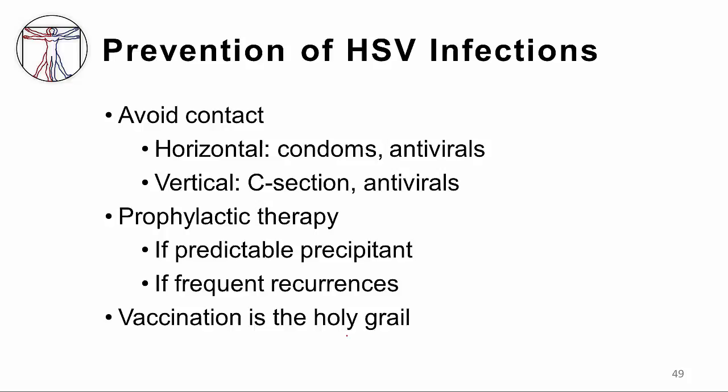There may also be a role for antiviral therapy in pregnant women, although that role is not dramatic and not completely defined, but it is often used. Prophylactic antiviral therapy may be useful under some limited circumstances — for example, for persons with frequently recurrent oral, genital, or ocular herpes. Giving acyclovir typically over long periods of time to suppress recurrence has been shown to be effective under limited circumstances.